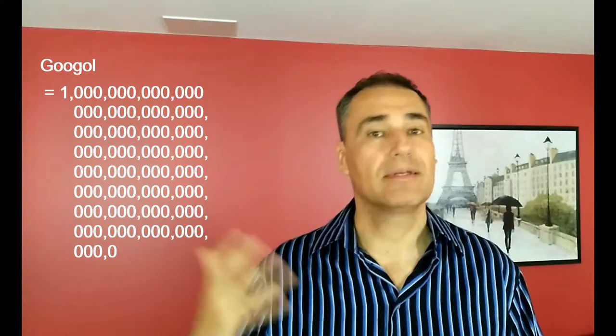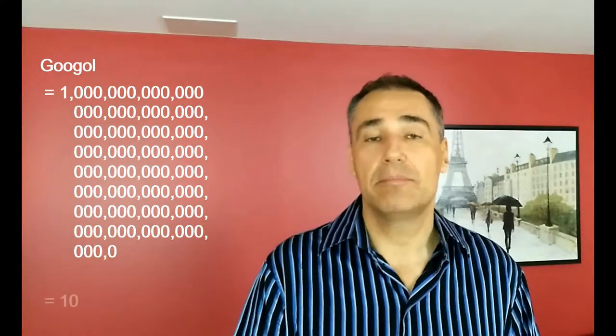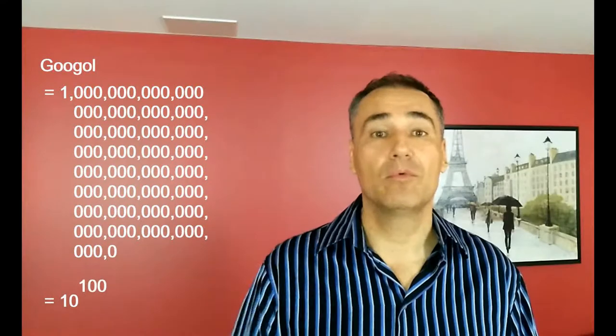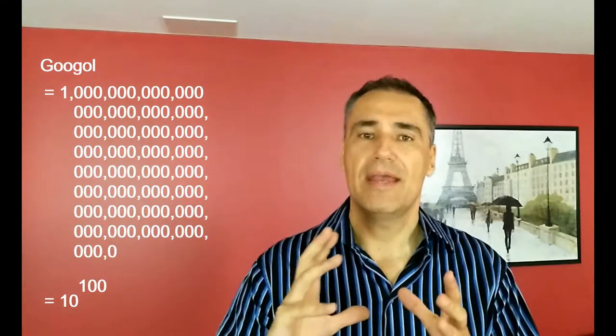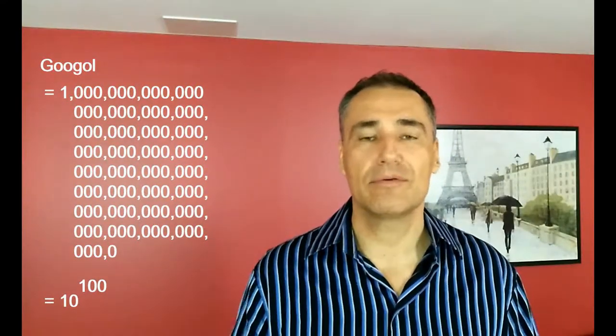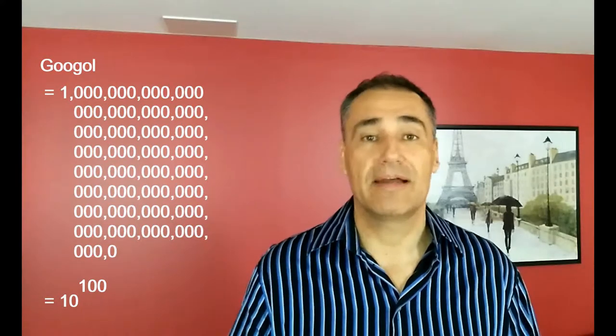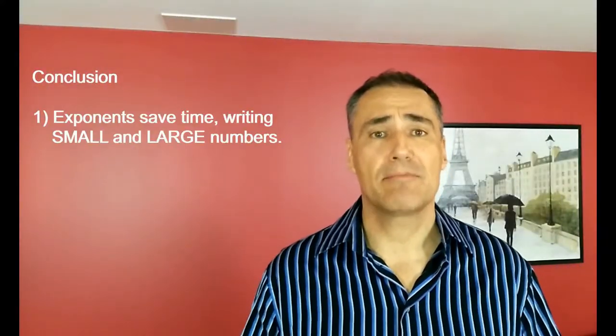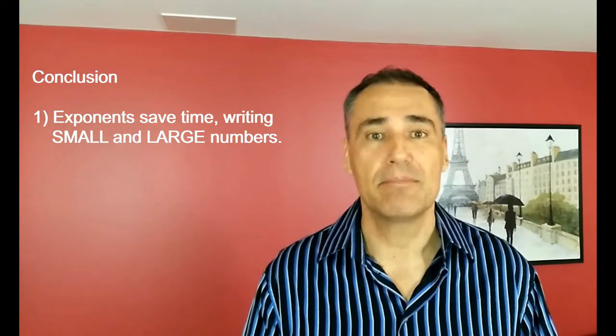My third example is a Googol. Now, a Googol, watch how you spell it, is G-O-O-G-O-L. It represents a really big number. And it's actually 1 with 100 zeros after it. And you can express that using a base and exponent. And the way you do that is the base is 10 and the exponent would be 100. So it's so much easier than writing out all those zeros. 10 to the 100, that's a Googol. So I hope you see that exponents will help you save time writing out incredibly small or incredibly large numbers.